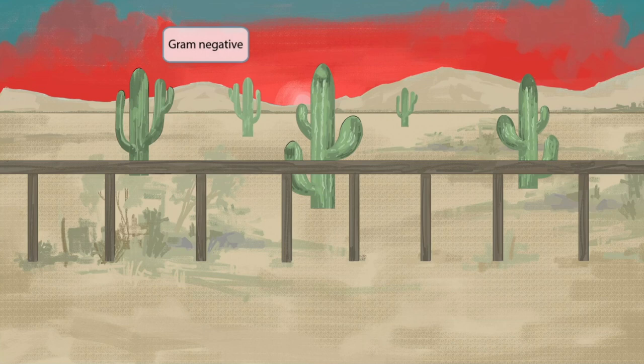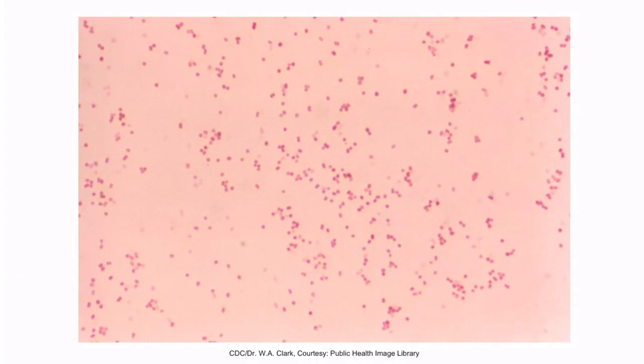I'd like to point out the red sunset. As you hopefully know by now from our other videos, this means that Moraxella catarrhalis is a gram-negative organism. This is a gram stain of Moraxella. The stain is red or pink, which is why it's a gram-negative organism, and the bacteria are circular shaped. So Moraxella is a gram-negative coccus.